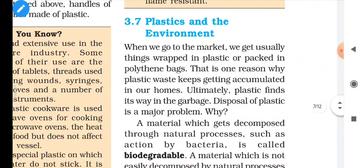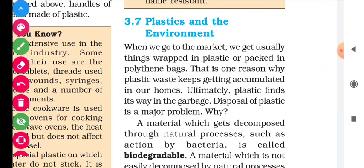When we go to the market, we get things usually wrapped in plastic or packed in polythene bags. That is one reason why plastic waste keeps getting accumulated in our homes. When we go to the shop or buy any food items, food items and all of these things are packed in a plastic wrapper. In this way, plastic material accumulates in our homes, and ultimately plastic finds its way into garbage. The disposal of plastic is a major problem.